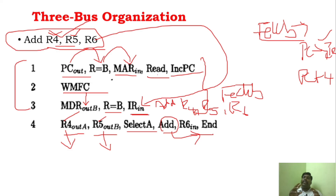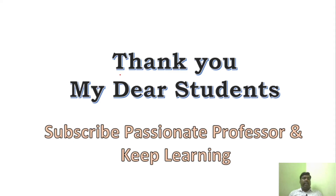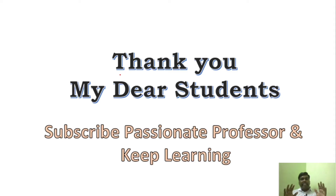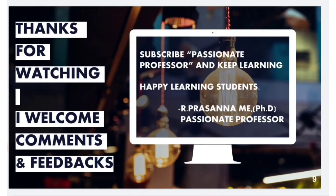That is the three-bus instruction execution — simplified steps where PC instruction goes directly to MAR through the R equals B operation via the ALU. Today we have seen three-bus organization: the difference between single bus and three-bus organization, how to draw the diagram, and how the instruction is executed. Hope you understand the logic — thank you students, subscribe to Passionate Professor and keep learning.